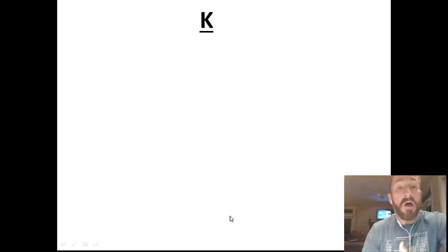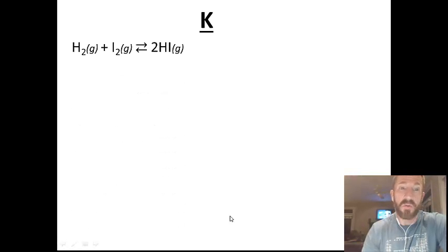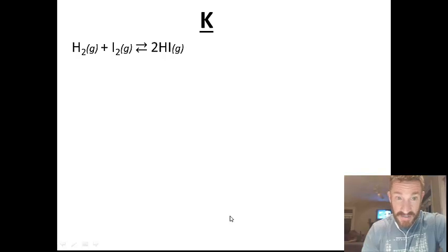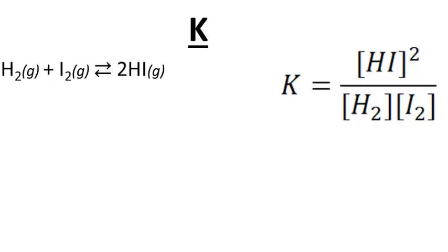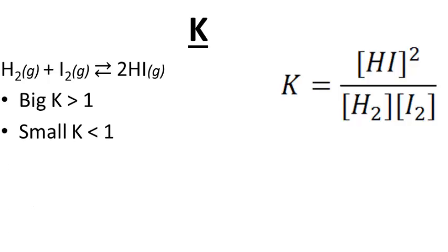A couple more things about K — big or small, where do we draw the line? The dividing line is the number 1. Looking at the reaction of hydrogen and iodine forming hydrogen iodide, with the K expression having hydrogen iodide squared in the numerator and the reactants in the denominator: a big K is any K value greater than 1, and a small K is any number smaller than 1.